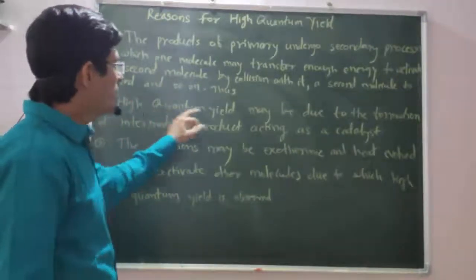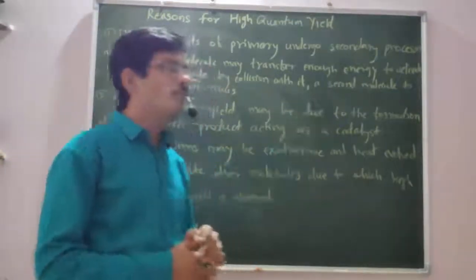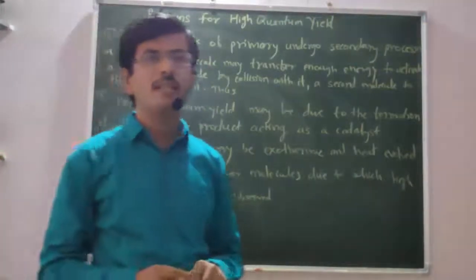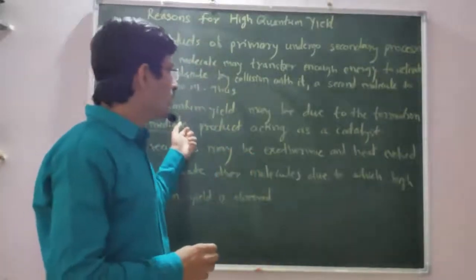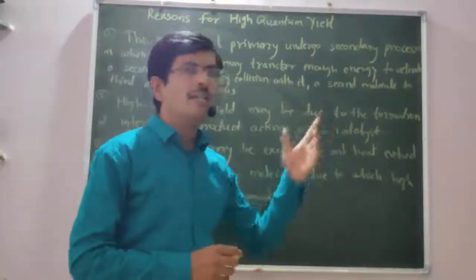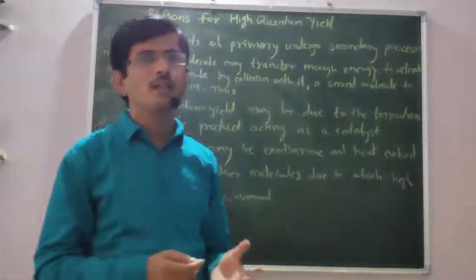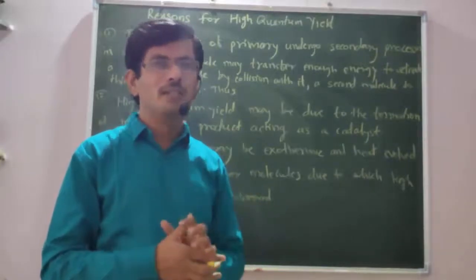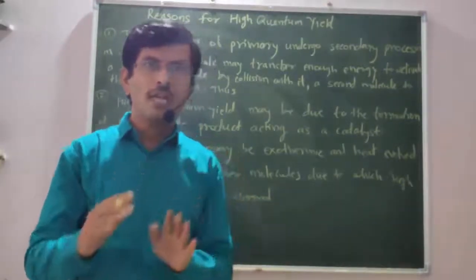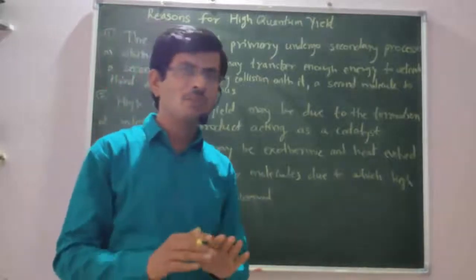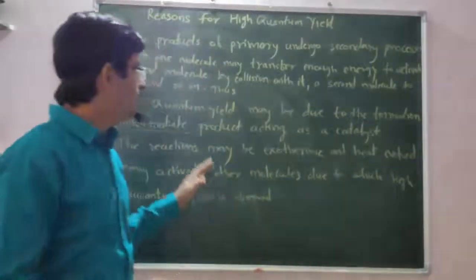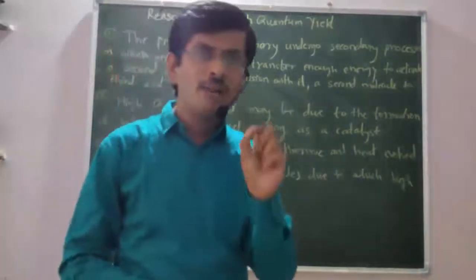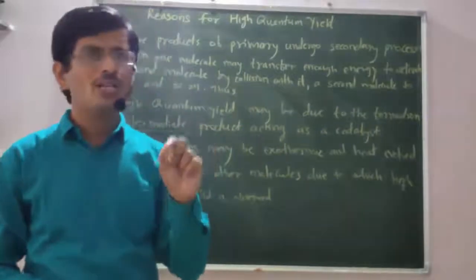The second reason: high quantum yield may be due to the formation of intermediate products. These intermediate products act as a catalyst. We know that a catalyst increases the rate of reaction without taking part in the reaction. So quantum yield is high due to the formation of intermediate products which act as catalyst.